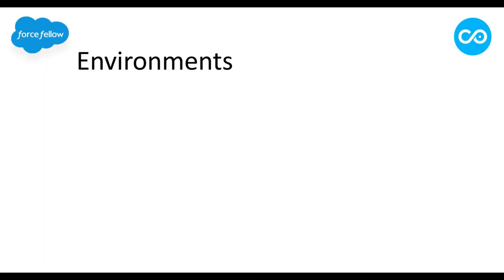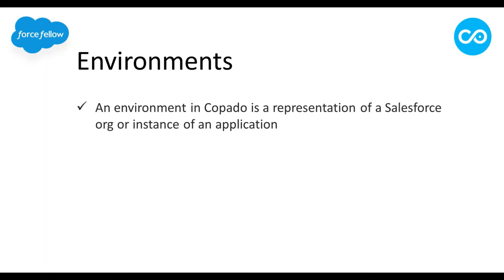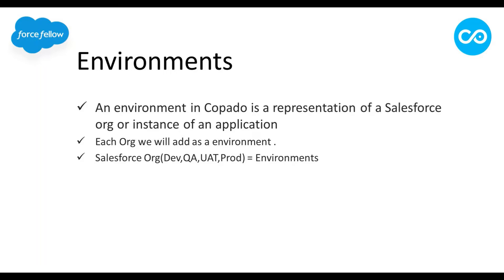Next we have Environments. An environment in Copado is a representation of a Salesforce org. We usually have multiple orgs for a single project — like Developer orgs, UAT orgs, Integration orgs, and Production org. We need to connect each org as an environment in Copado so Copado can perform its operations. So each Salesforce org equals one environment in Copado.